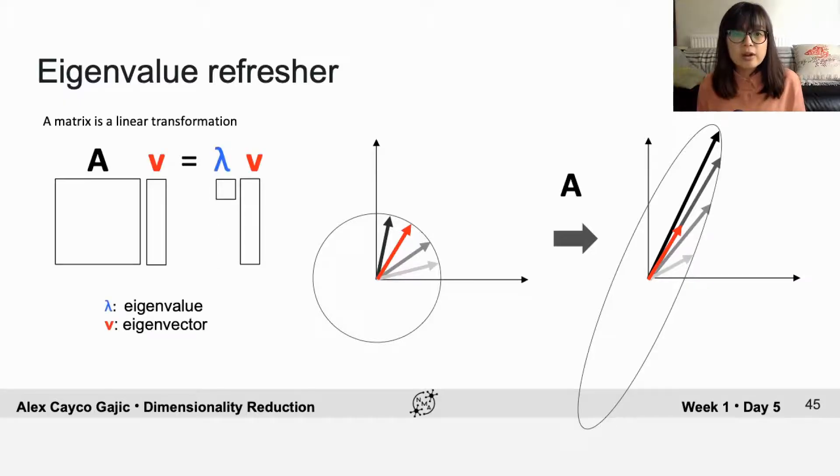An eigenvector for a matrix A is a vector that satisfies the equation on the left. This is A times v, so the linear transformation of the vector v by the matrix A, equals a scalar lambda times the same vector v. So the eigenvector is a vector such that the linear transformation is just a stretching or shrinking in the same direction, and the stretching or shrinking amount, lambda, we call the eigenvalue.